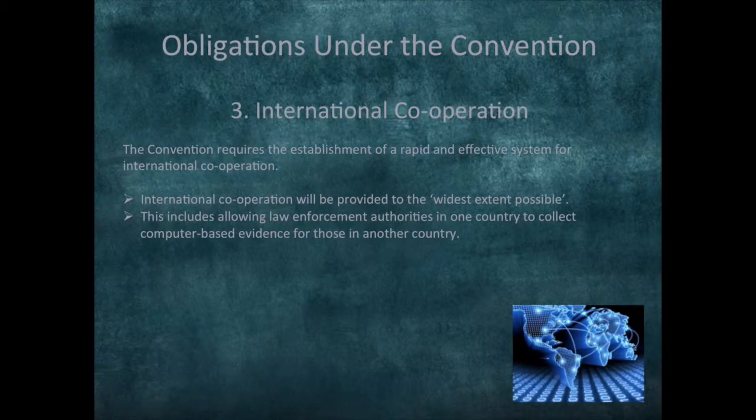The third requirement of the Convention is the establishment of a rapid and efficient system for international cooperation. Article 23 of the Convention stipulates that parties shall cooperate with each other to the widest extent possible. The Convention on Cybercrime facilitates Australia's ability to provide mutual assistance to state parties and to receive such assistance in return.